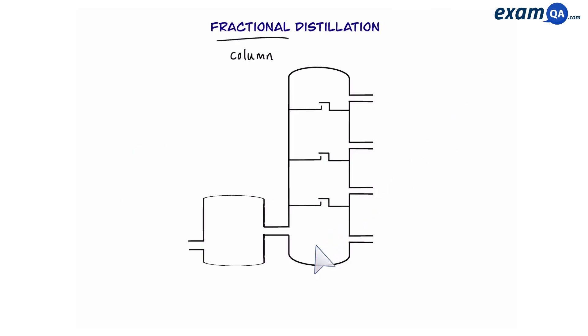Here we have a fractional column. We're going to put the crude oil which is the mixture of hydrocarbons in and heat it until it gets vaporized. The vapors will then go into the fractional column and start to move upwards. Now the fractional column is much hotter at the bottom and it's cooler at the top.